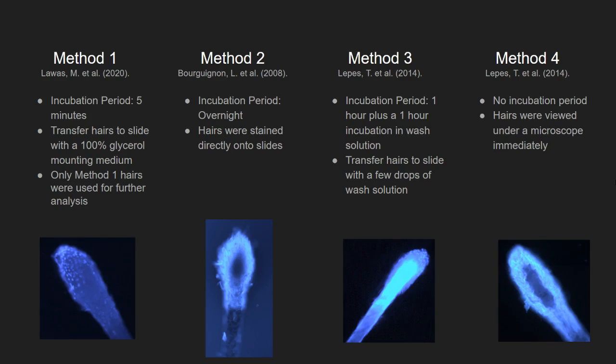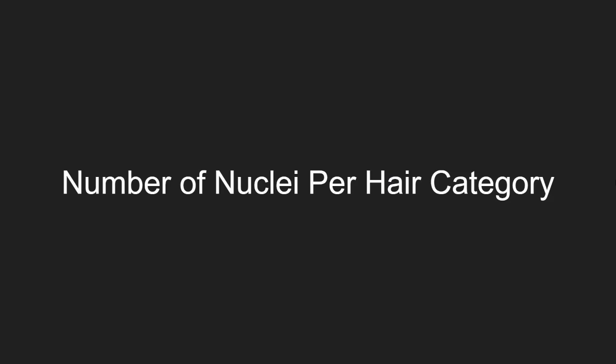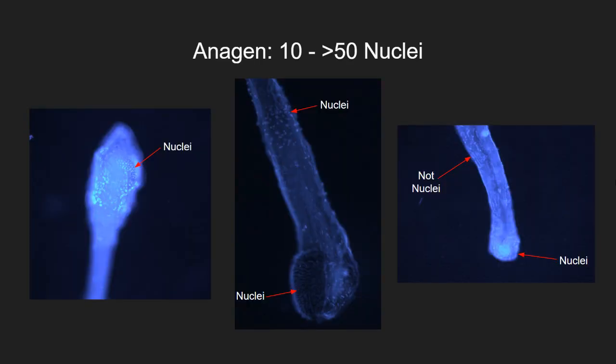From these sets of methods, I concluded that method 1 gave the best overall picture when it came to visualization of the nuclei. Another factor was that it was quick and simple to do. From my study, the number of nuclei per category varies. The blue dots in the photos are the nuclei, while the lines may be some type of debris.